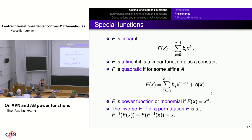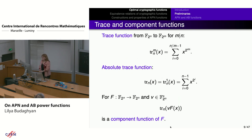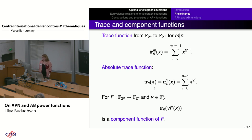Quadratic functions have algebraic degree at most 2 and have univariate representations where the powers of x have binary weight at most 2. A power function or monomial is a function whose univariate representation has the form x^d for some positive integer d. Permutations are one-to-one mappings, and for permutations we can define inverses. We also fix notation for the trace function from F_{2^n} to F_{2^m}, and define a component function of an n-to-n function f as the absolute trace of v·f(x) for non-zero v.